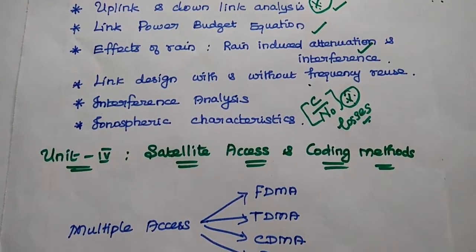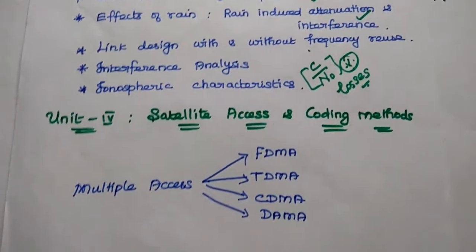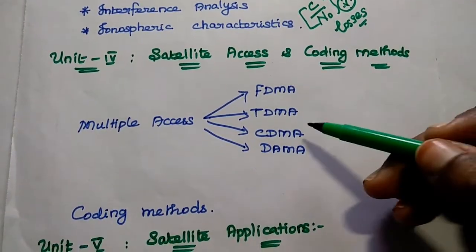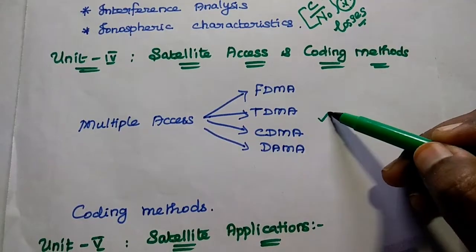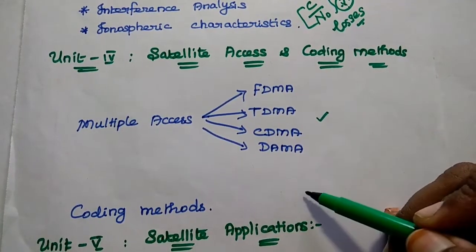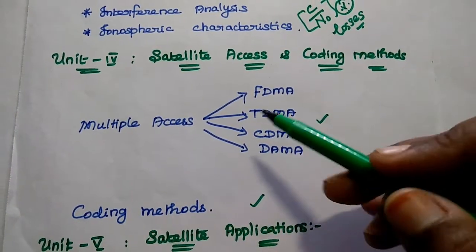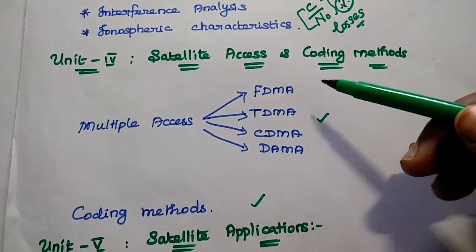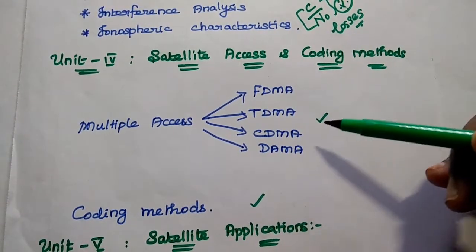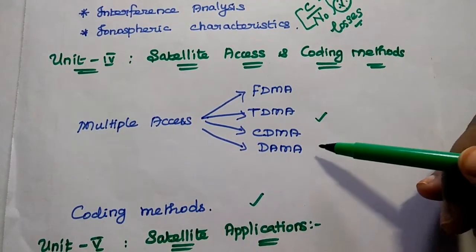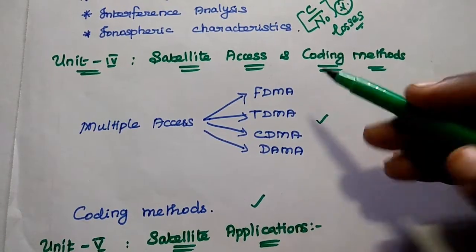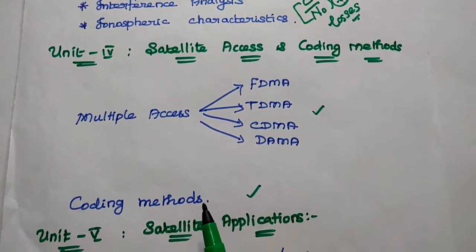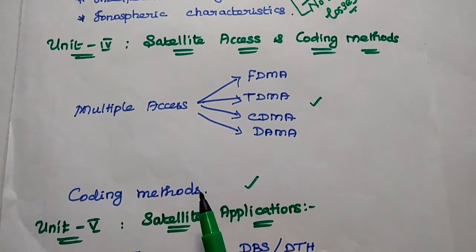The fourth unit covers satellite access and coding methods. Here we can have multiple access techniques as well as coding methods. Multiple access techniques include four types: FDMA, TDMA, CDMA, and DAMA. Any one of these multiple access techniques may appear in the exam.